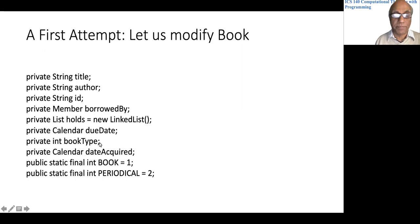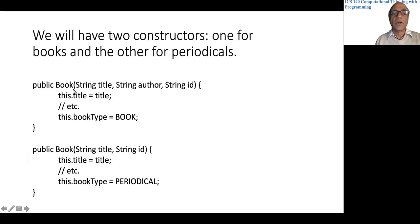If you are creating an actual book, we need the title, author, and ID. We store the title, author, and ID, and we set the bookType to BOOK. If it is a periodical, there is no author. It is a collection of articles, so we have just title and ID, and we set the bookType to PERIODICAL.